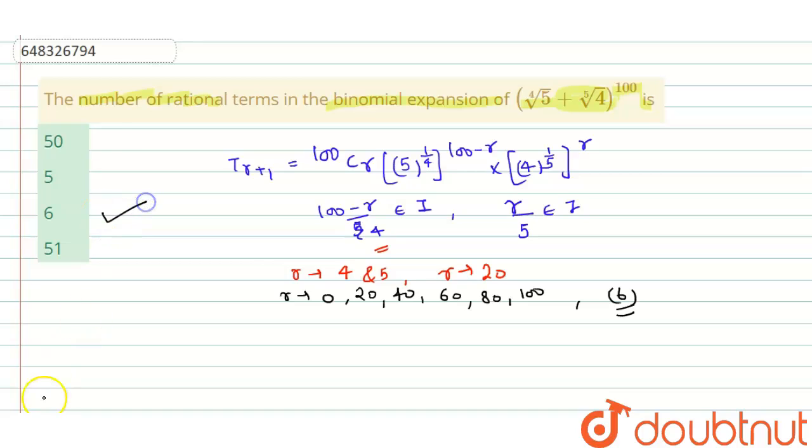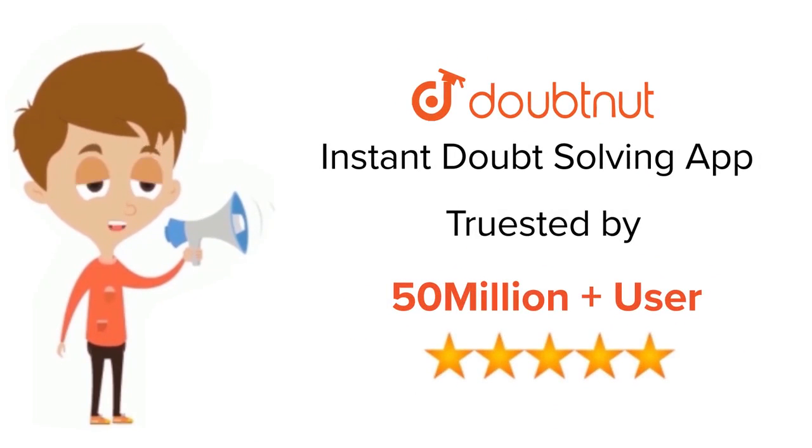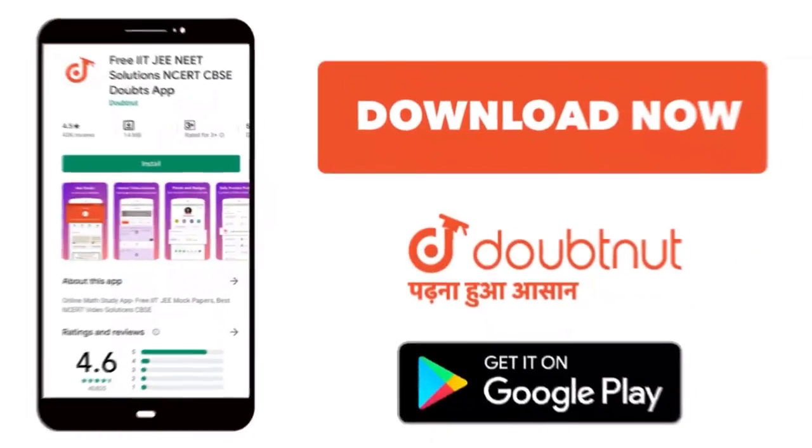So our answer will be option C, 6. Hope you understand this solution. For class 6 to 12, IIT-JEE and NEET level, trusted by more than 5 crore students. Download Doubtnut app today.